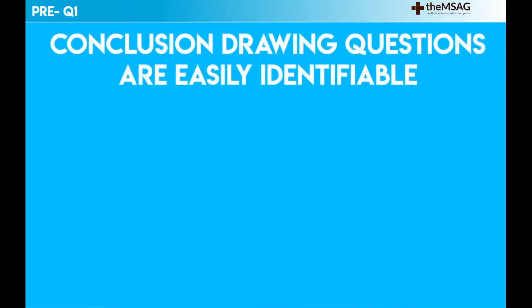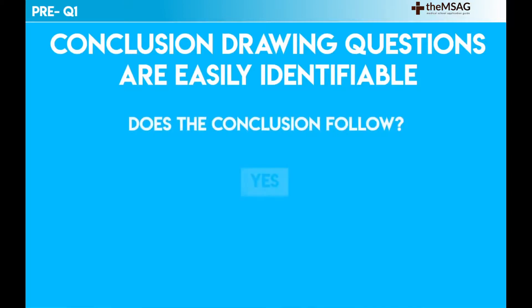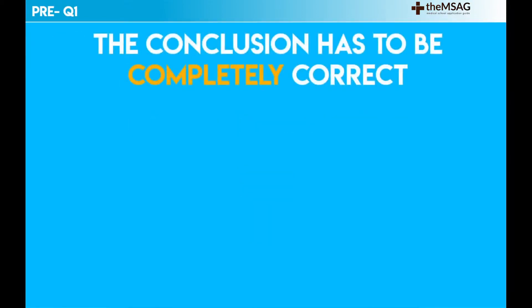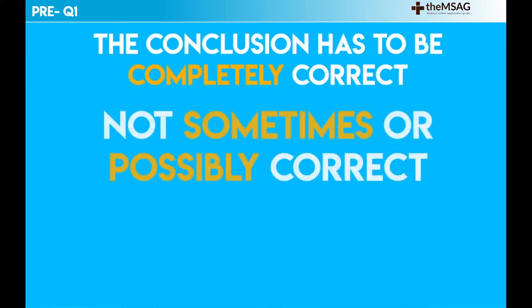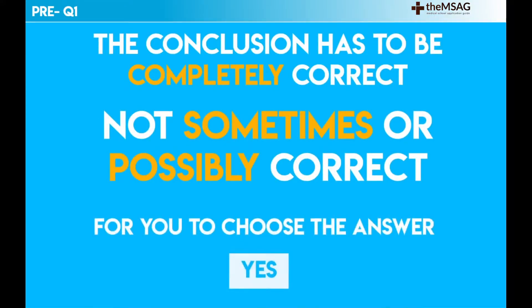Conclusion drawing questions are easily identifiable as they tend to ask you to place yes if the conclusion does follow, and to place no if the conclusion doesn't follow, for five statements. Remember, the conclusion has to be completely correct — and not sometimes or possibly correct — for you to choose the answer yes.